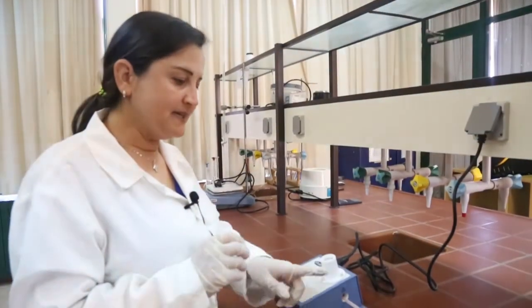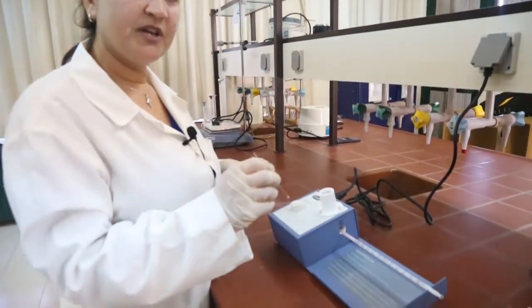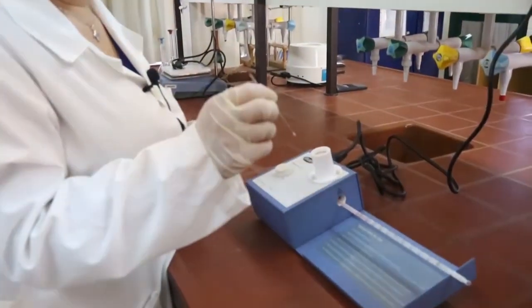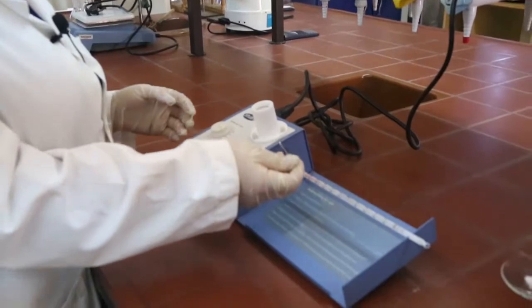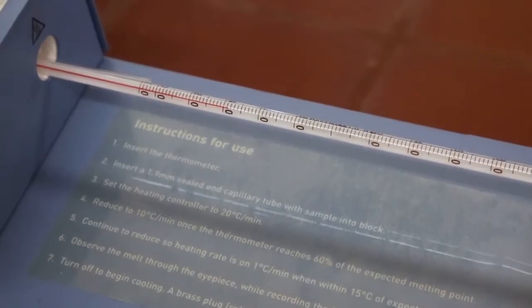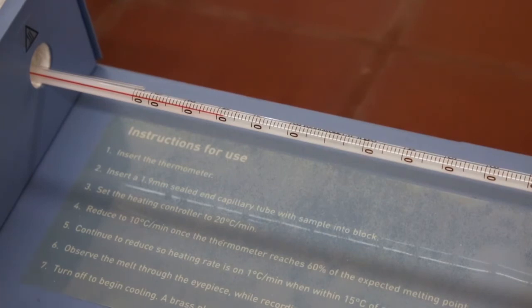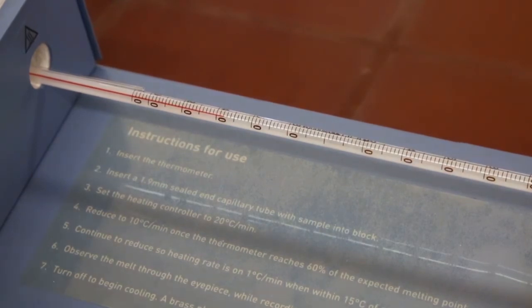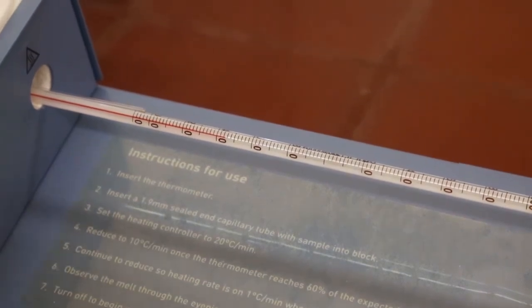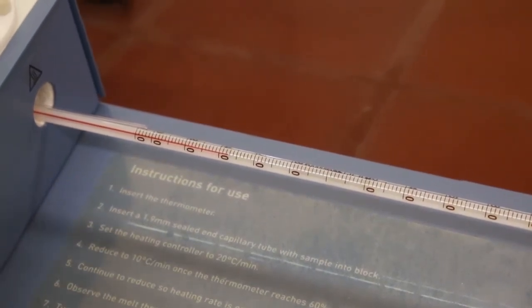The machine is at room temperature. I will introduce my capillary tube of the mixture inside. As the theory says, the melting point of the mixture should be lower than both acetanilide and benzoic acid. That's why I have to wait. I don't know at which temperature I have to start.